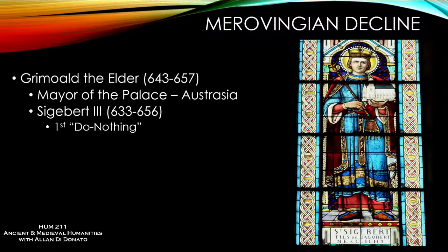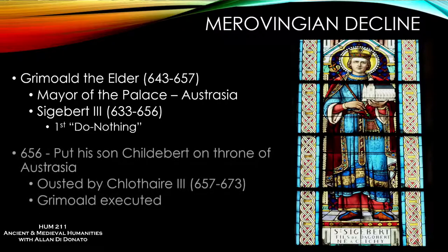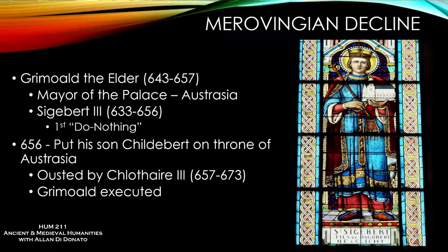The idea of 'do-nothing kings' became a common designation for later Merovingian kings who let the kingdom be run by the Mayors of the Palace. Grimoald saved the life of Sigibert III on the battlefield, became a great companion of the king, and manipulated him so thoroughly that he convinced the childless Sigibert to adopt his own son, Childebert. Later, when Sigibert had a biological child — later known as Dagobert II — Grimoald arranged for that boy to be shipped to a monastery with his head shaved. Grimoald's son Childebert then became king of Austrasia in 656, but was ultimately overthrown, and Grimoald was executed.